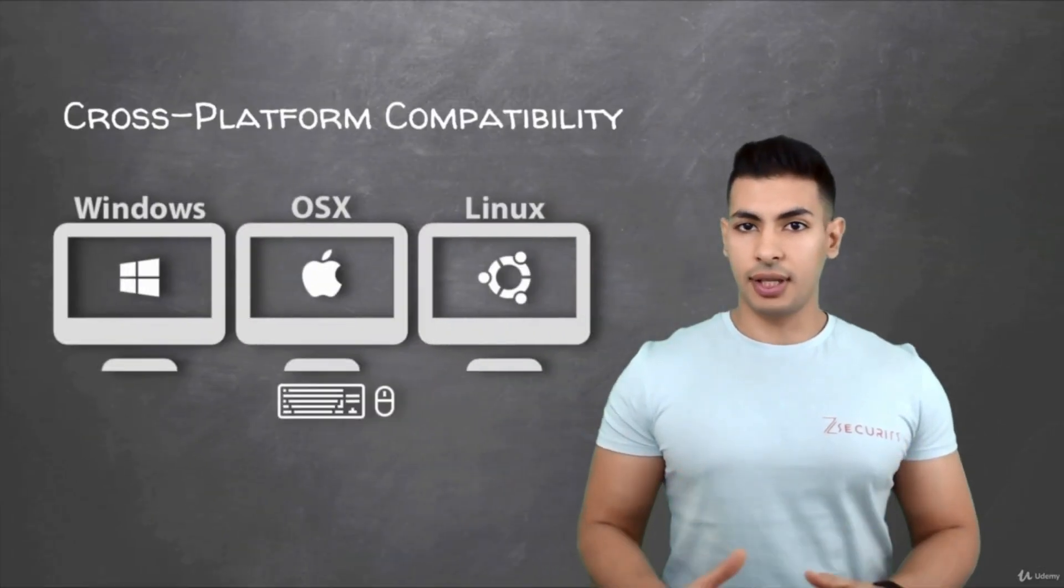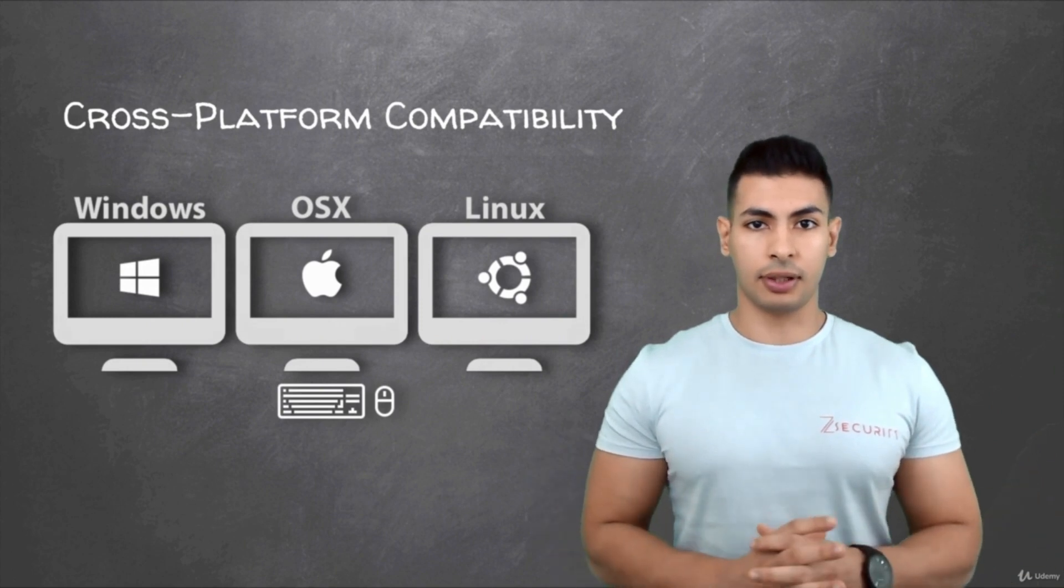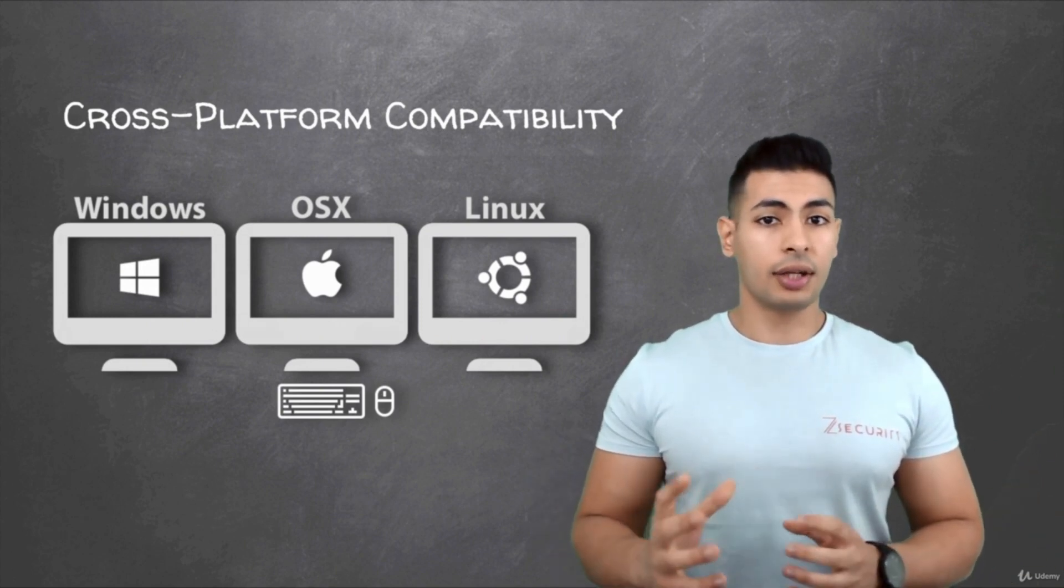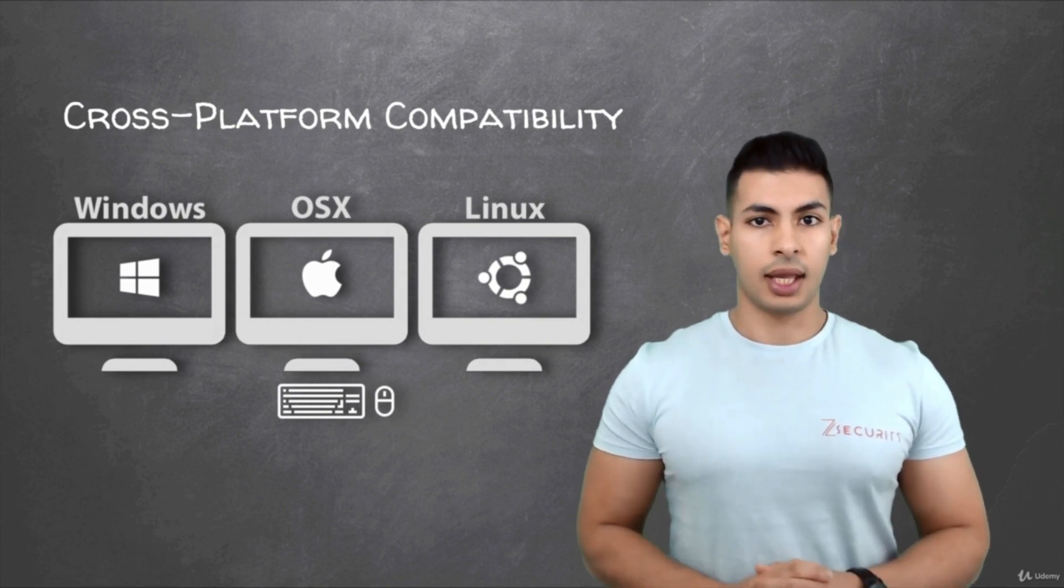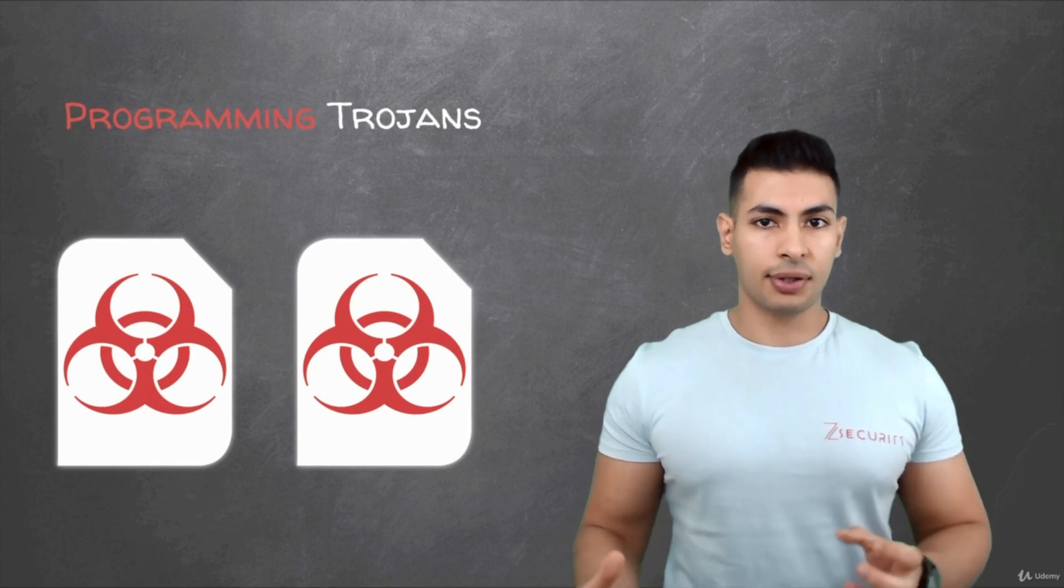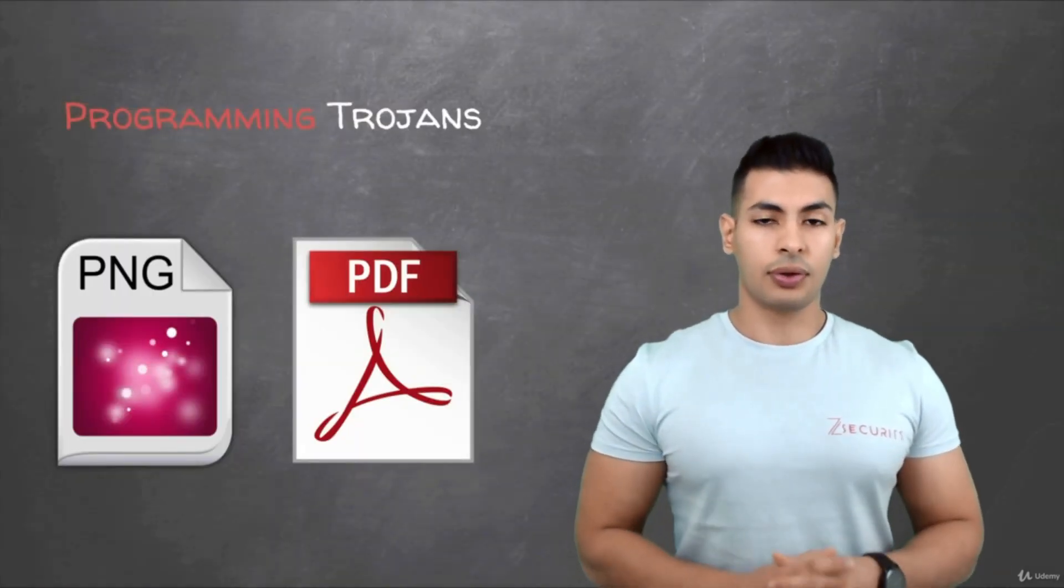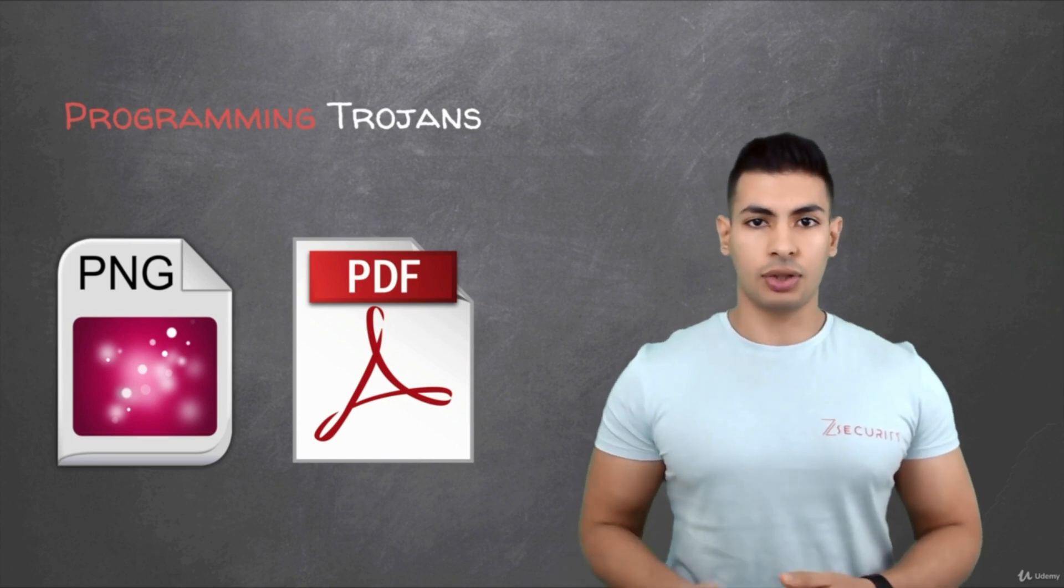In the last part of this section, I'm going to show you how to package all of the programs that we built so far so that they can run on any operating system on Windows, OS X, and Linux. Not only that, but I'm also going to show you how to convert these programs into Trojans so they look and function just like any other file type like an image or a PDF.